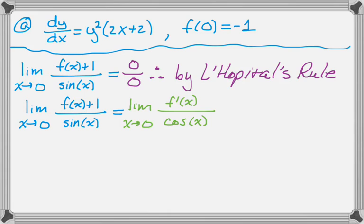And now I need to figure out what f prime... I actually know at this point I'm not going to get an indeterminate form, because the cosine of 0 is not 0. It's actually 1. So I need to figure out the derivative at 0. So that's going to be dy/dx evaluated at (0,-1), which is (-1)² times the quantity (2·0+2).